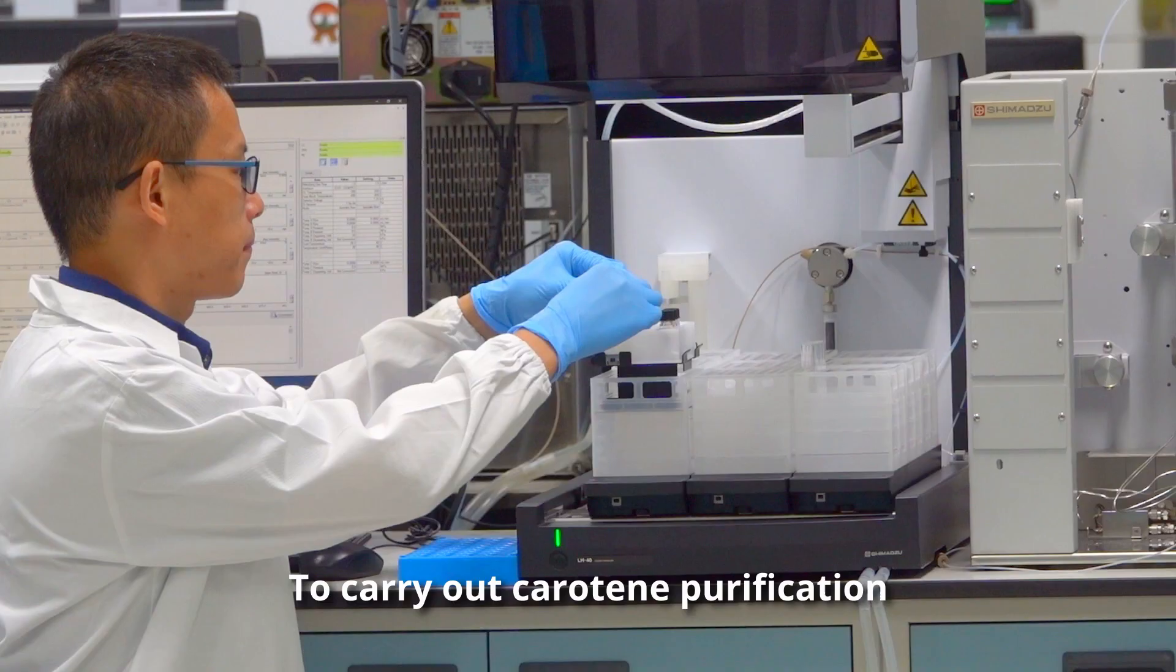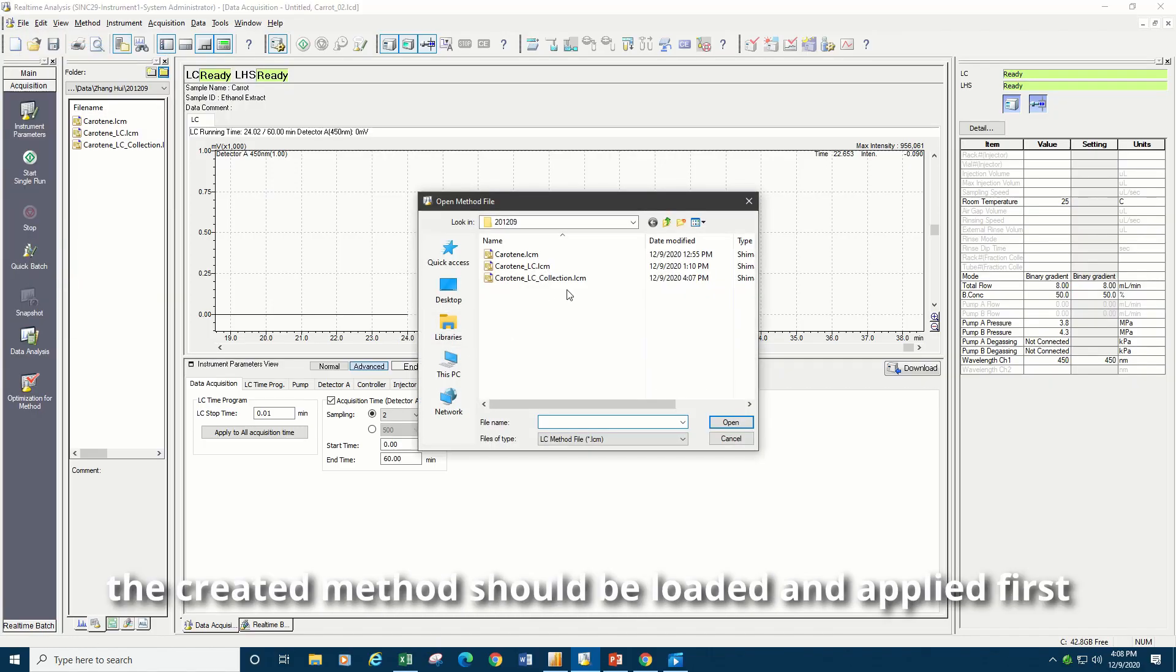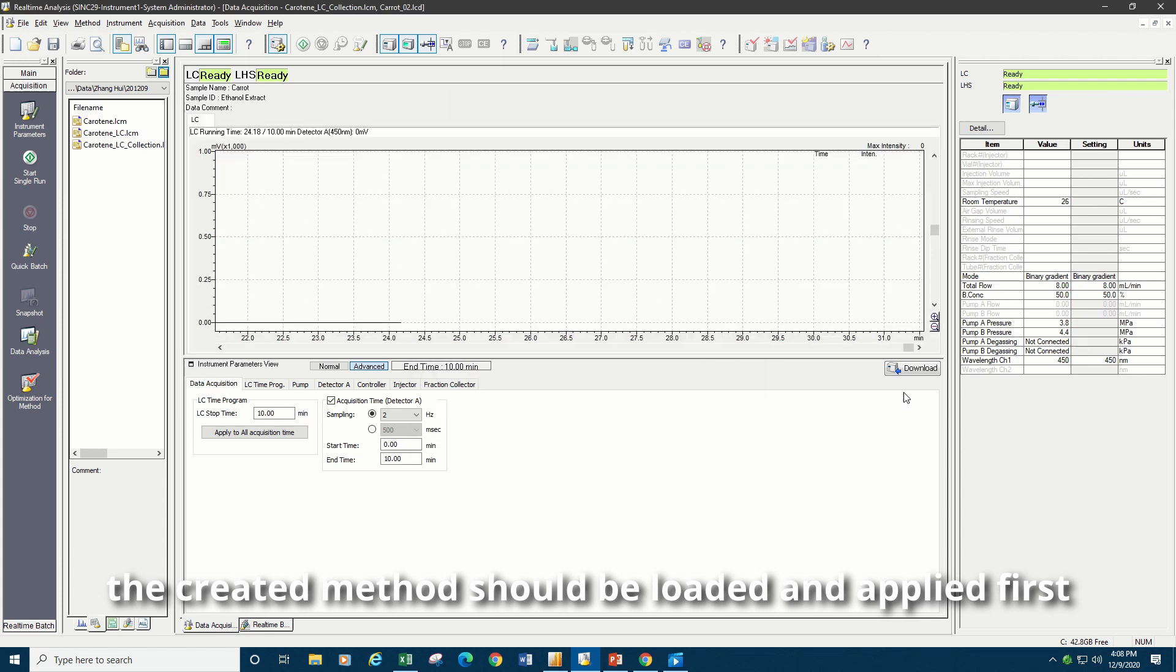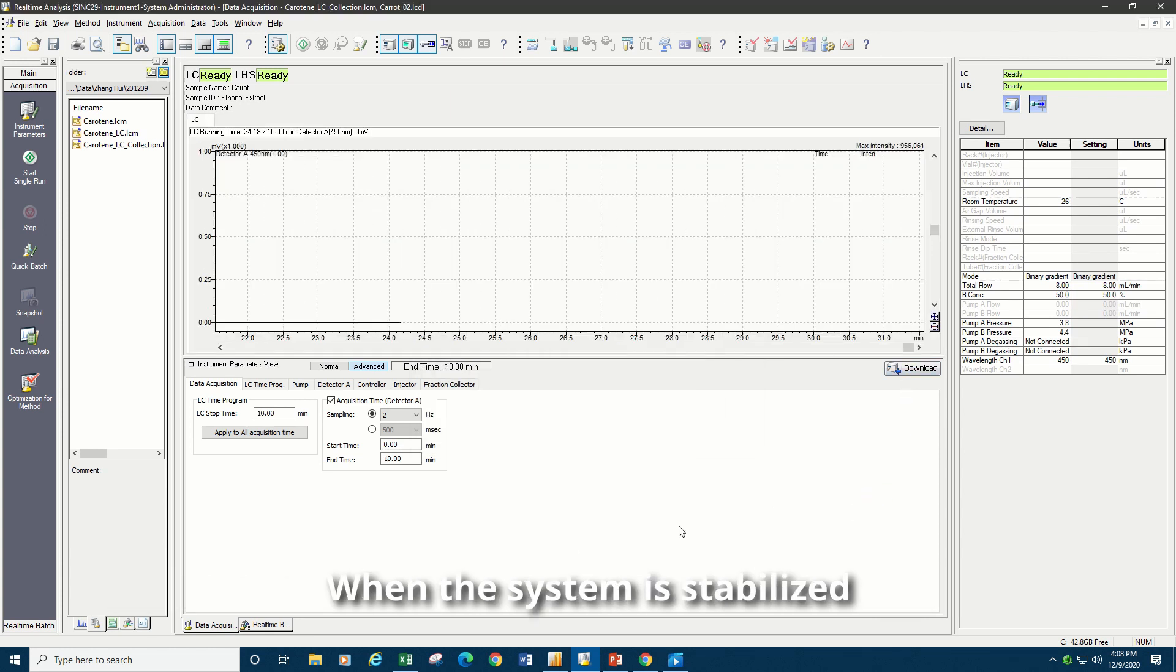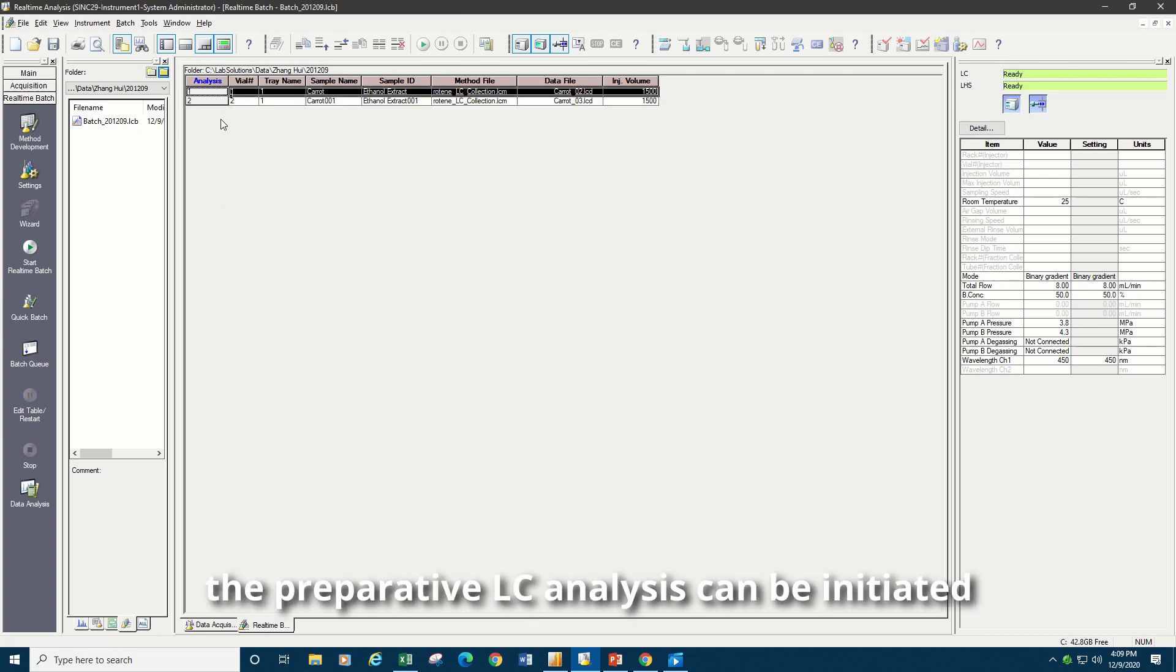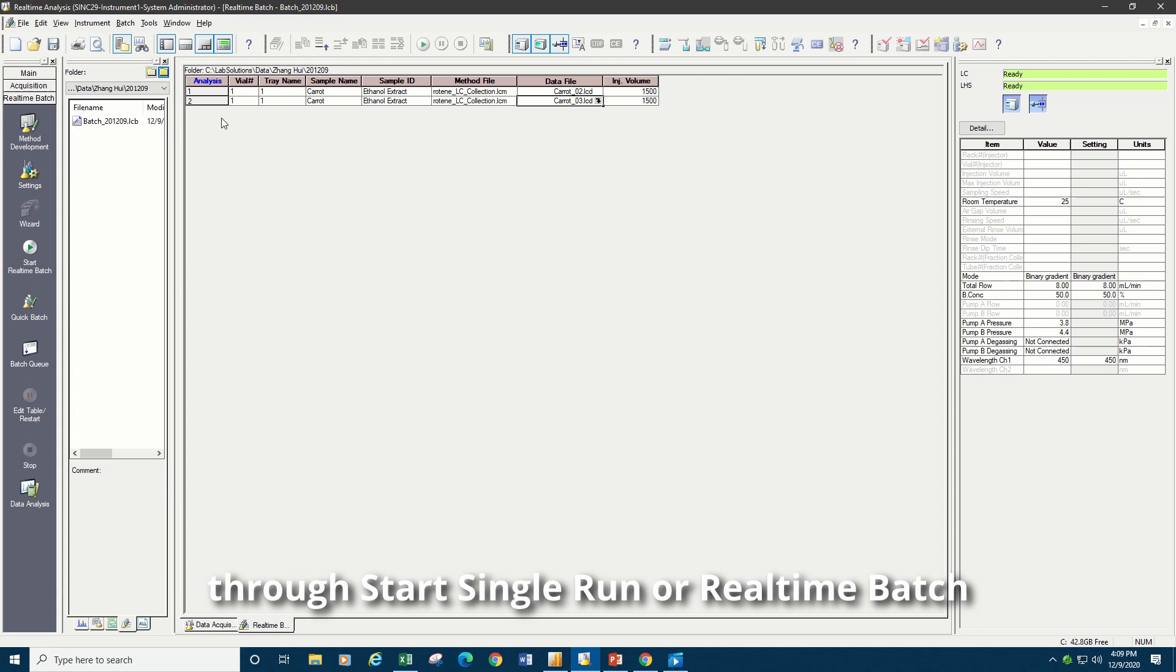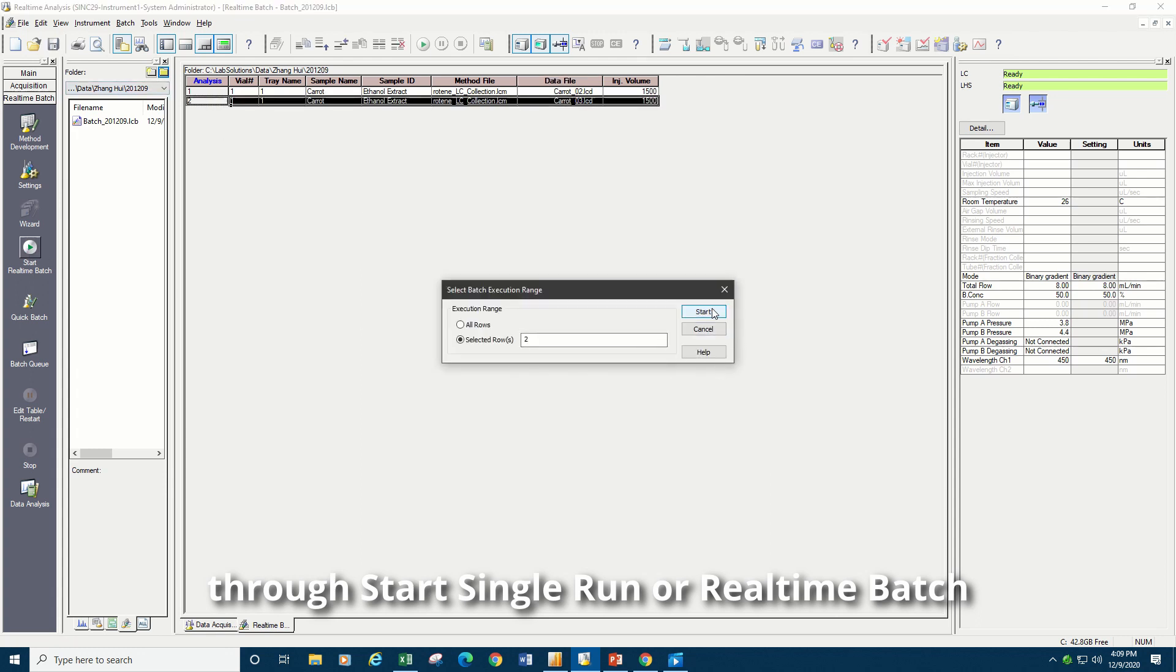To carry out carotene purification, the created method should be loaded and applied first. When the system is stabilized, the Preparative LC Analysis can be initiated through Start Single Run or Real-Time Batch.